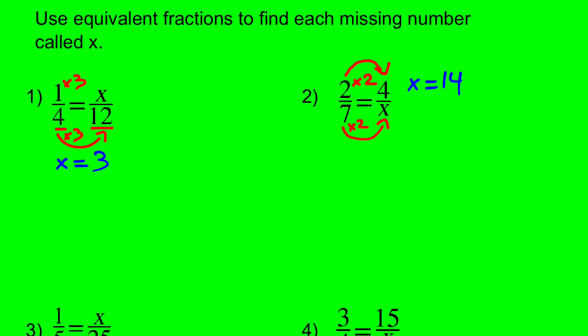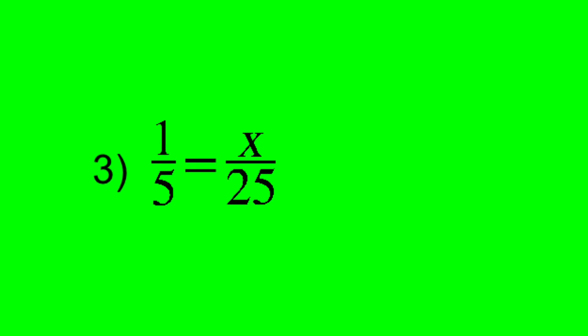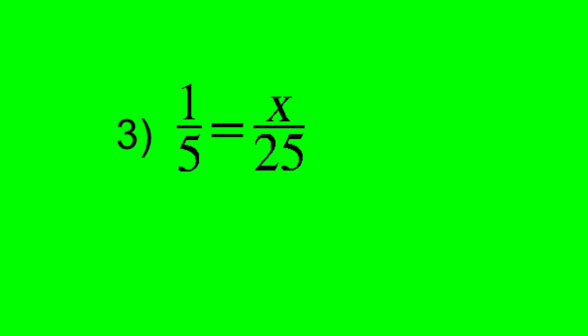And we'll just look at a couple more there. So number 3, what do I multiply by 5 that will get me 25? Well, 5 times 5. And to figure out the value of the unknown number x, I do the same thing to 1, 1 times 5. And I get that the value of x is 1 times 5, which is 5.